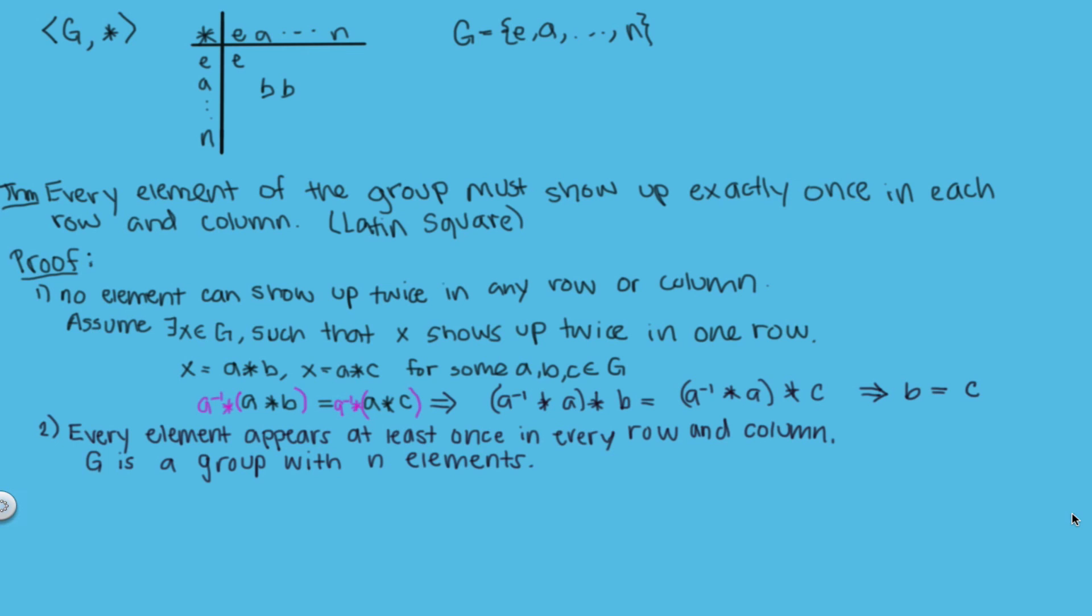And we know that every spot in our table has to be filled to be a well-defined group. So we know that each of the n elements must be used, and that tells us that every element appears at least once in every row and column. Now with both of these proved, we can say that every element appears exactly once in each row and column.